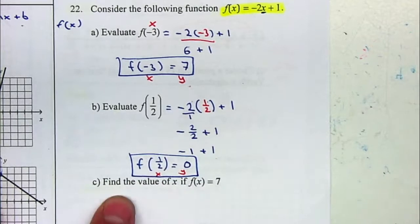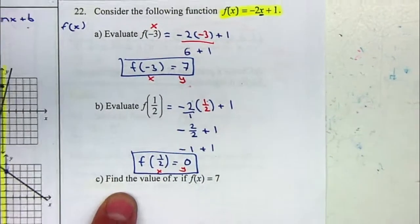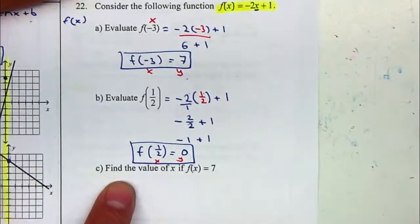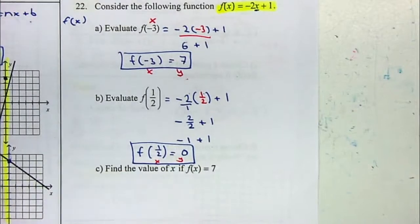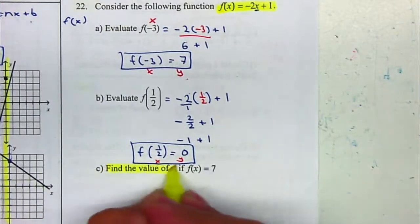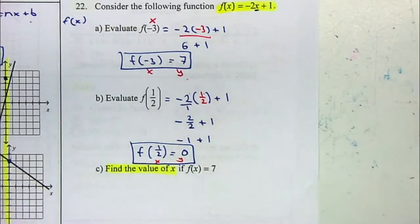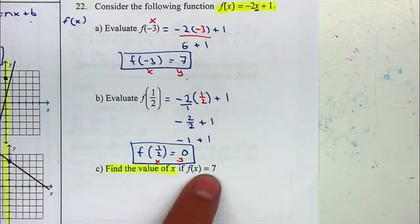For letter c, it's asking you to find the value of x. They are looking for the value of x, so your answer should be x equals something. And they tell you that f of x is equal to 7.